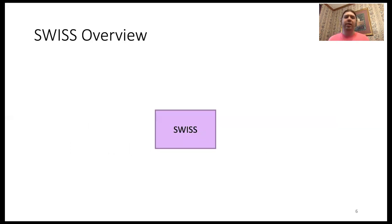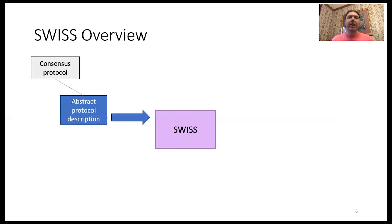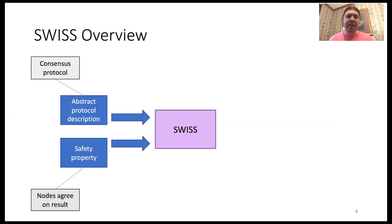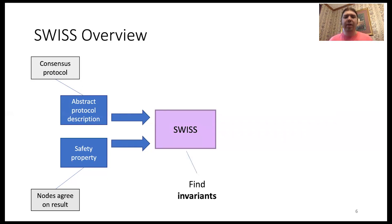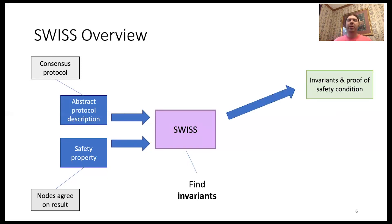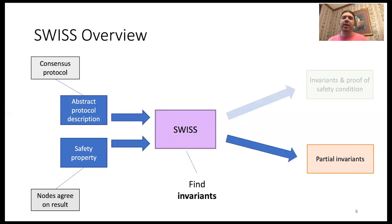To put this into a diagram: SWISS takes as input an abstract protocol description — for example, a consensus protocol like Paxos — and also a safety property that we want to prove, such as that all nodes agree on their result. SWISS finds invariants of the distributed system, and if it succeeds, it outputs those invariants as well as a proof of the safety condition. If it doesn't succeed, it will output some partial invariants.